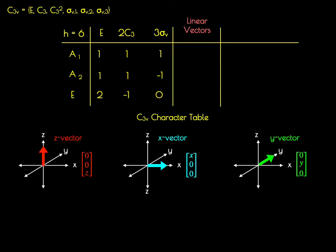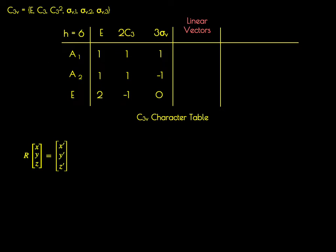The linear vectors are aligned along the z, the x, and the y-axis of a Cartesian axis system. The vectors are defined such that the z vector has zero magnitude in the x and y directions but some magnitude along z. The x vector has some magnitude along x but zero in y and z. The y vector has some magnitude in y but none in x and z. What we're interested in is how the various symmetry operations transform those vectors into new vectors.